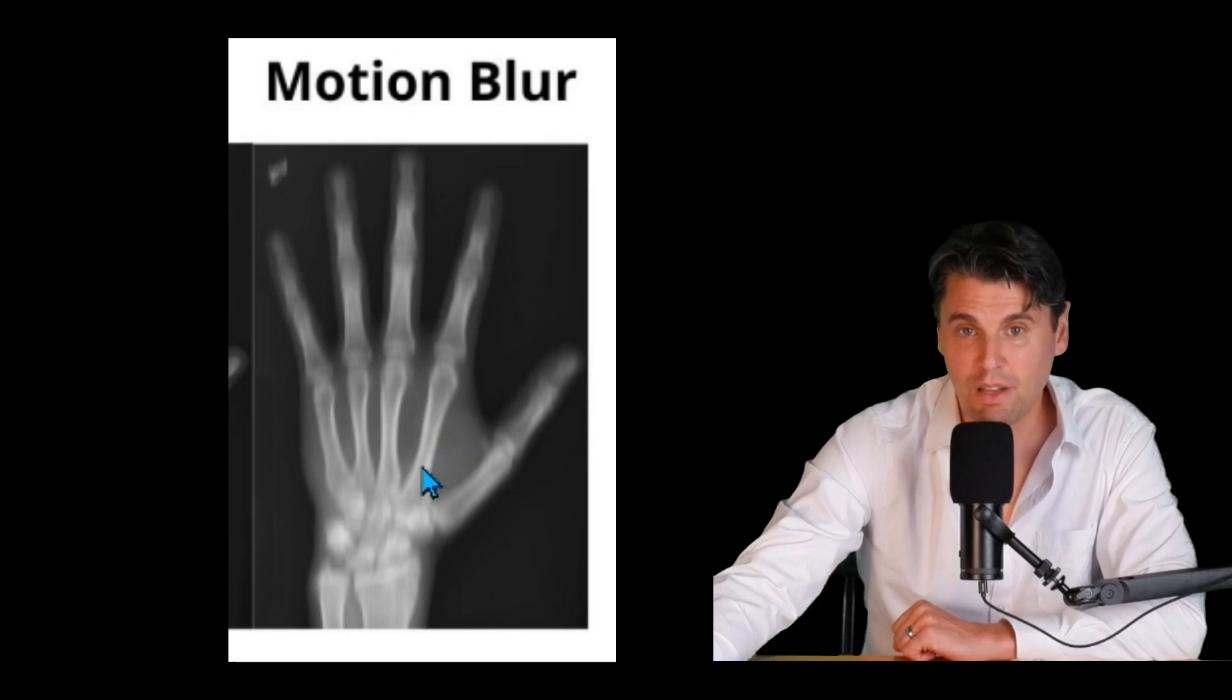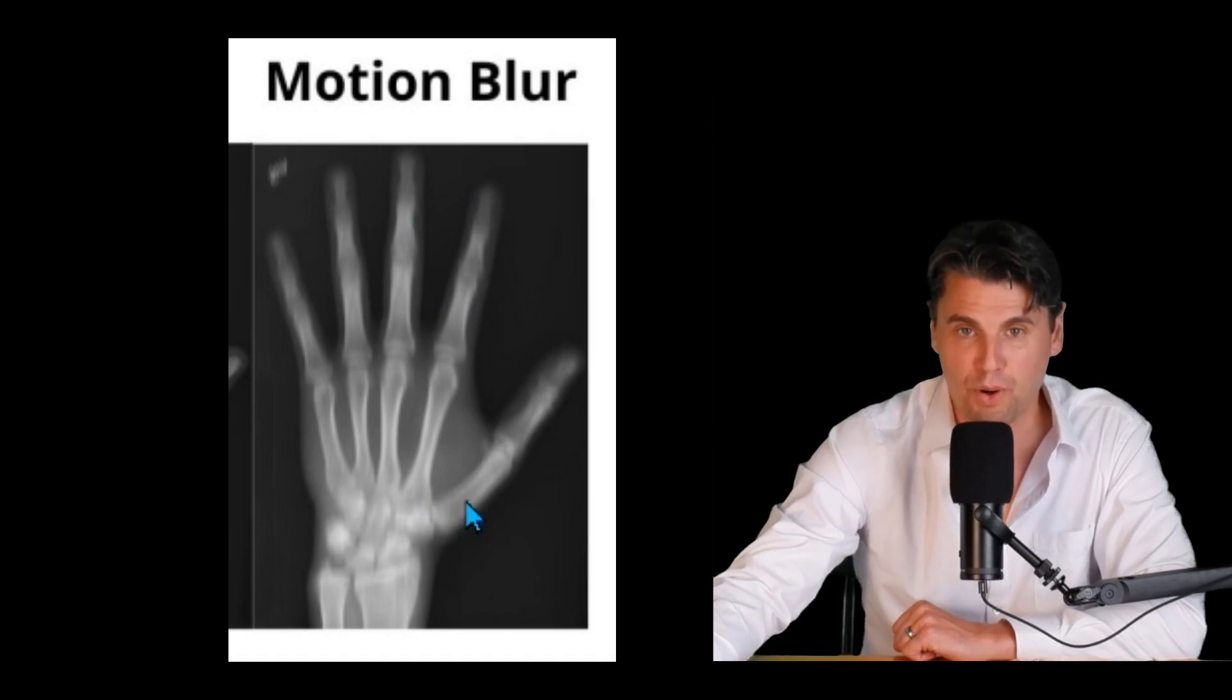This is kind of an extreme example. But you can see the edges of the bone going in the up-down direction are decently preserved here. But it's very difficult to appreciate the edges in the left-right direction in the image because those were blurred out.